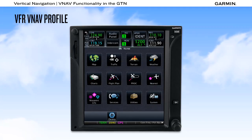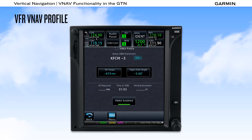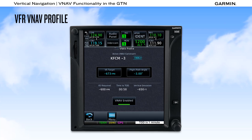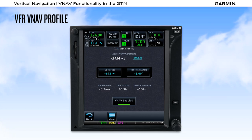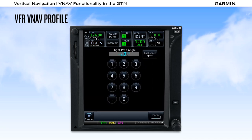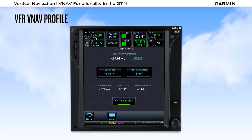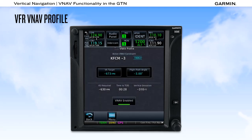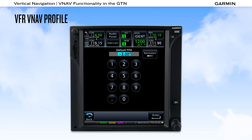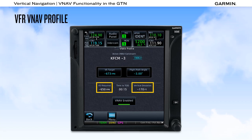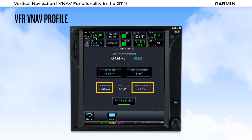From the home page, selecting Utilities then the VNAV button shows our VNAV profile. Based on current ground speed, we can expect to descend at 673 feet per minute to meet the default 3-degree flight path angle. Selecting either button allows temporary adjustments — for example, changing to a 2.5-degree descent angle or targeting 800 feet per minute. The default flight path angle can also be changed permanently via the menu button. The VS required and vertical deviation fields populate one minute prior to descent and are constantly recalculated based on changes in ground speed, descent rate, or deviation from the vertical path.